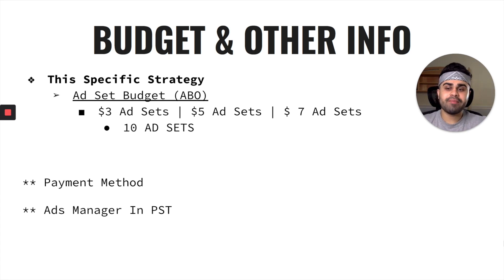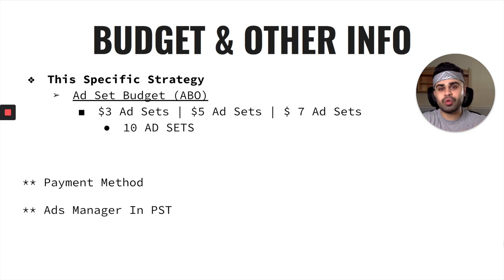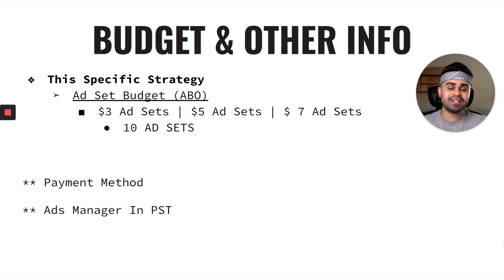Before we move into the ads manager, make sure you have some sort of payment method hooked up to your business manager or ads account. Also make sure your ads manager is in Pacific Standard Time, which is California time — that's where Facebook headquarters are and where Facebook operates from. I always like having it in Pacific Standard Time so when I set my ads at 12 a.m., Facebook re-optimizes as a system better and your ads will perform more evenly throughout the day. It's just a personal preference and my recommendation.